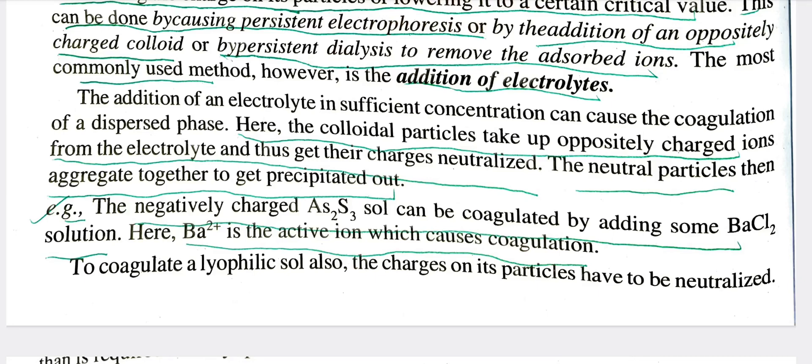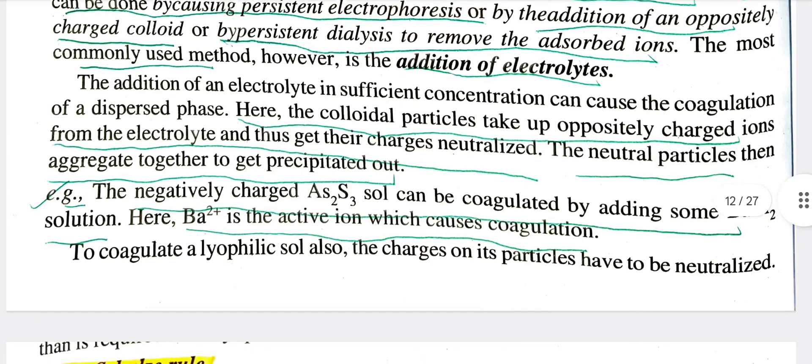For example, As₂S₃ sol can be coagulated by adding BaCl₂. For this arsenic sulfide compound sol, we add barium chloride to coagulate. Ba²⁺ is the active ion which causes the coagulation.